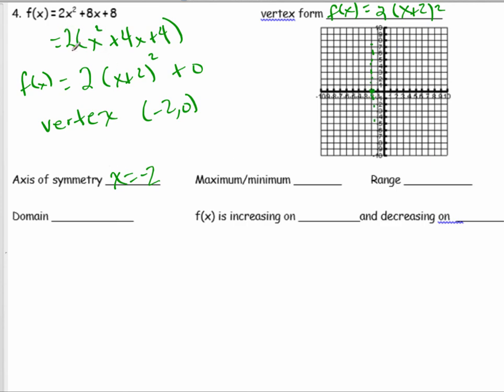The maximum or the minimum, this is going to be upward facing. So the minimum value is y = 0. The range is y ≥ 0. The domain is all reals. And where is f increasing and decreasing?